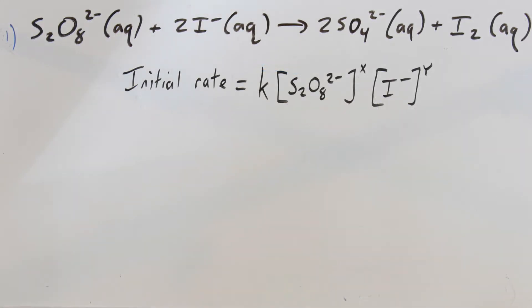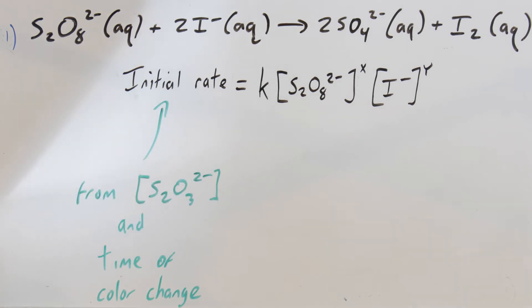The general rate law looks like this: the initial rate is equal to the rate constant at a given temperature and the concentrations of the reactants raised to their reaction orders. A very key point — those reaction orders do not have to correspond to the balanced equation, and in this case, they actually will not match the balanced equation.